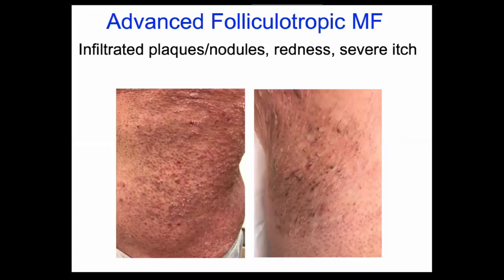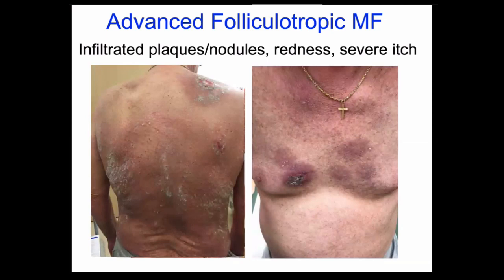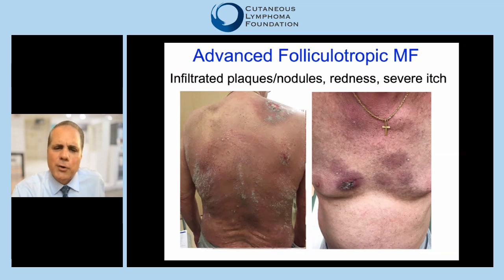Advanced folliculotropic mycosis fungoides can be quite severe, forming infiltrative plaques and nodules full of abnormal cells, creating dramatic redness and severe itch. It can form acne-like lesions in the armpit with clogged pores, or spiny lesions of hair follicles. Some form dramatic patches that ulcerate. This severe form must be treated with multiple modalities — skin-directed therapies, and more oncologic treatments and clinical trials for advanced disease discussed by Dr. Foss and Dr. Sethi.